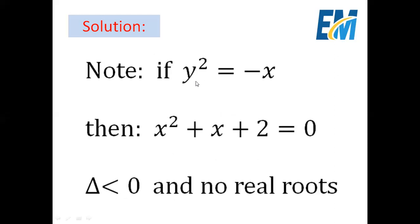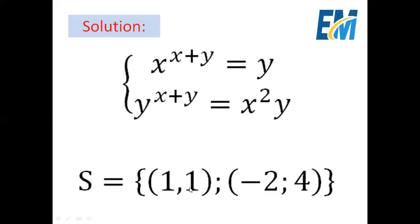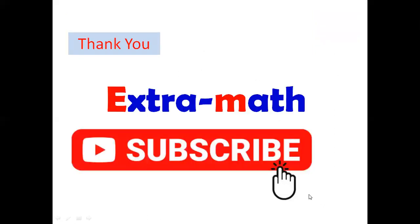Note that if y equals negative x squared, substituting into x plus y equals two gives a quadratic equation with a negative discriminant, so it has no real roots. Therefore the only two solutions of this system are (1, 1) and (−2, 4). Thank you for watching.